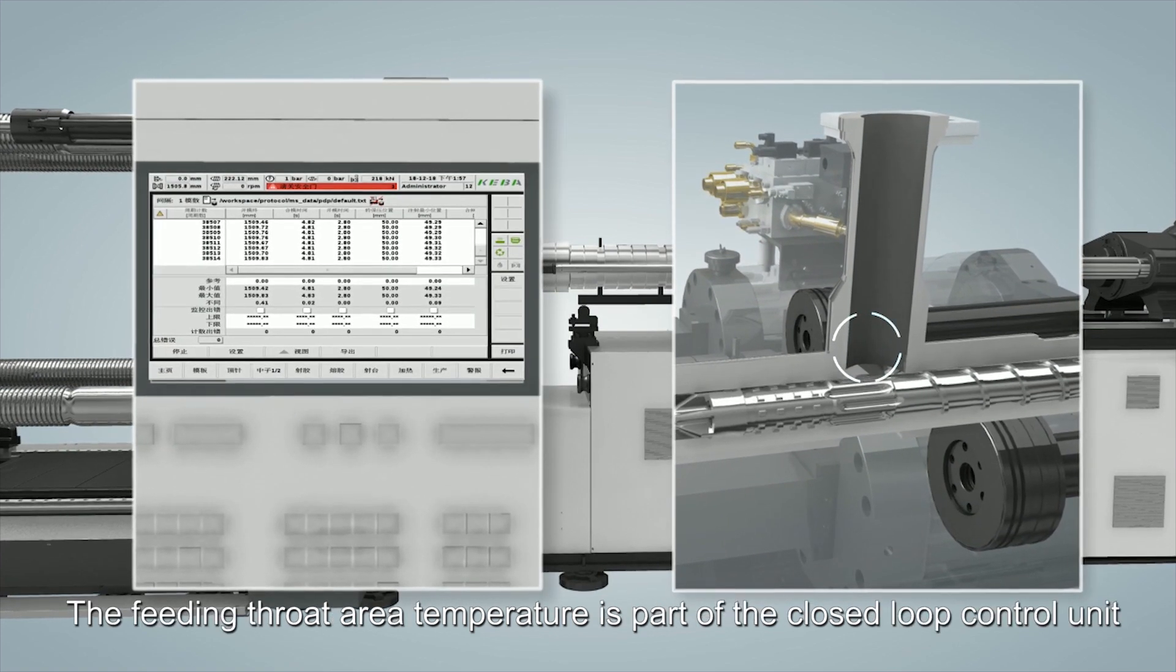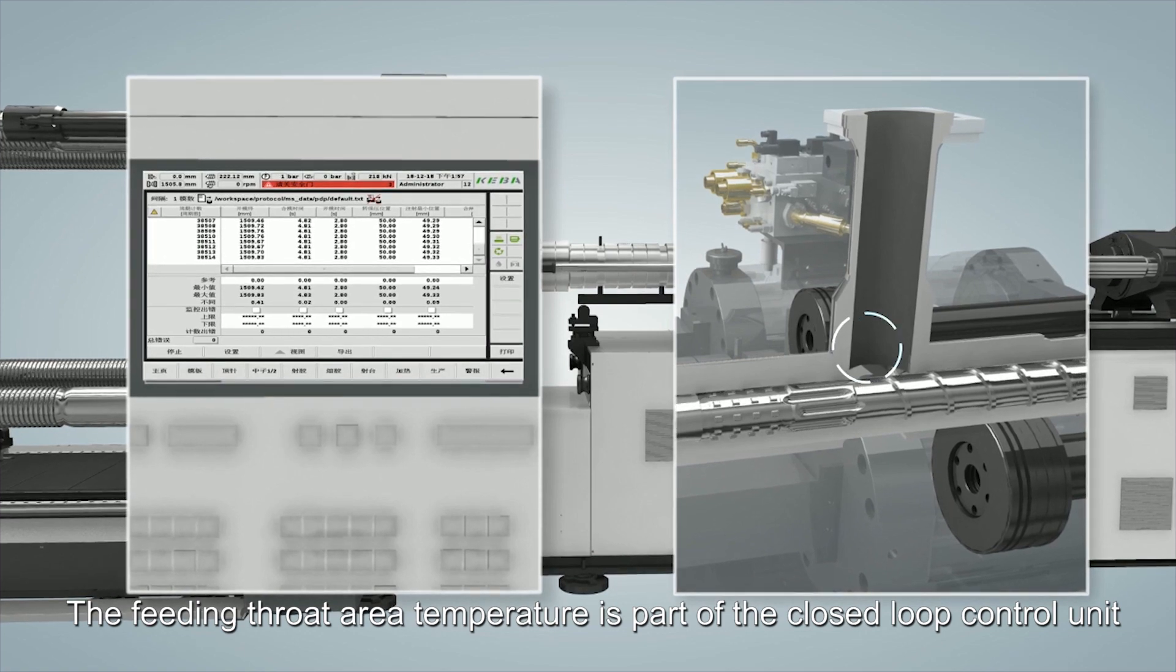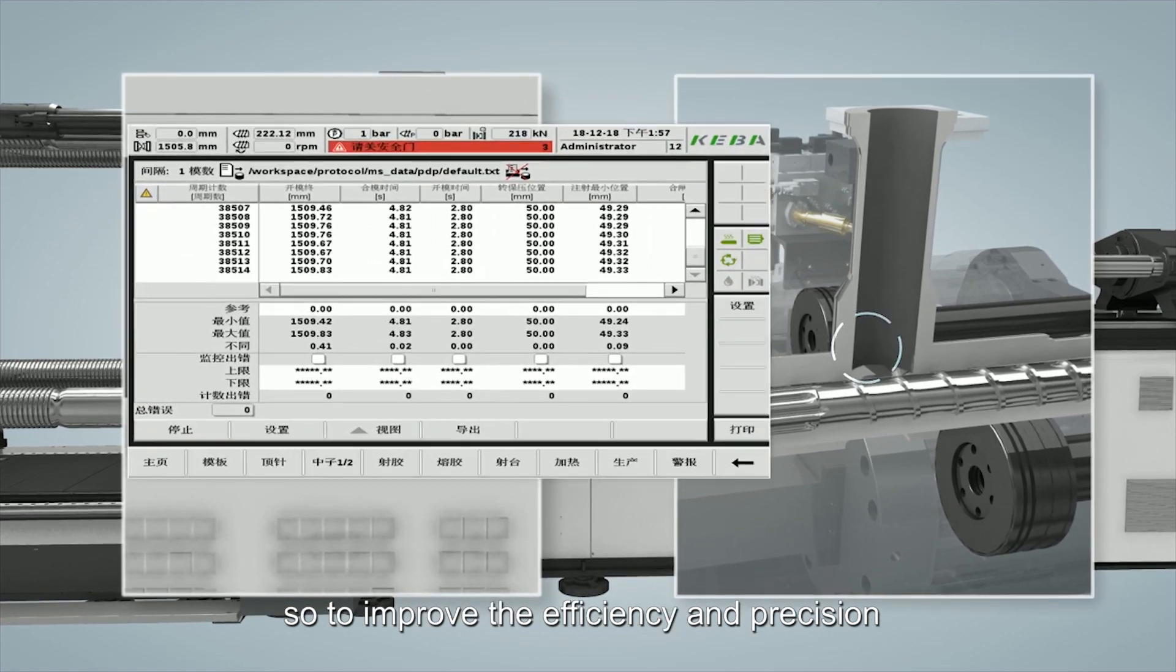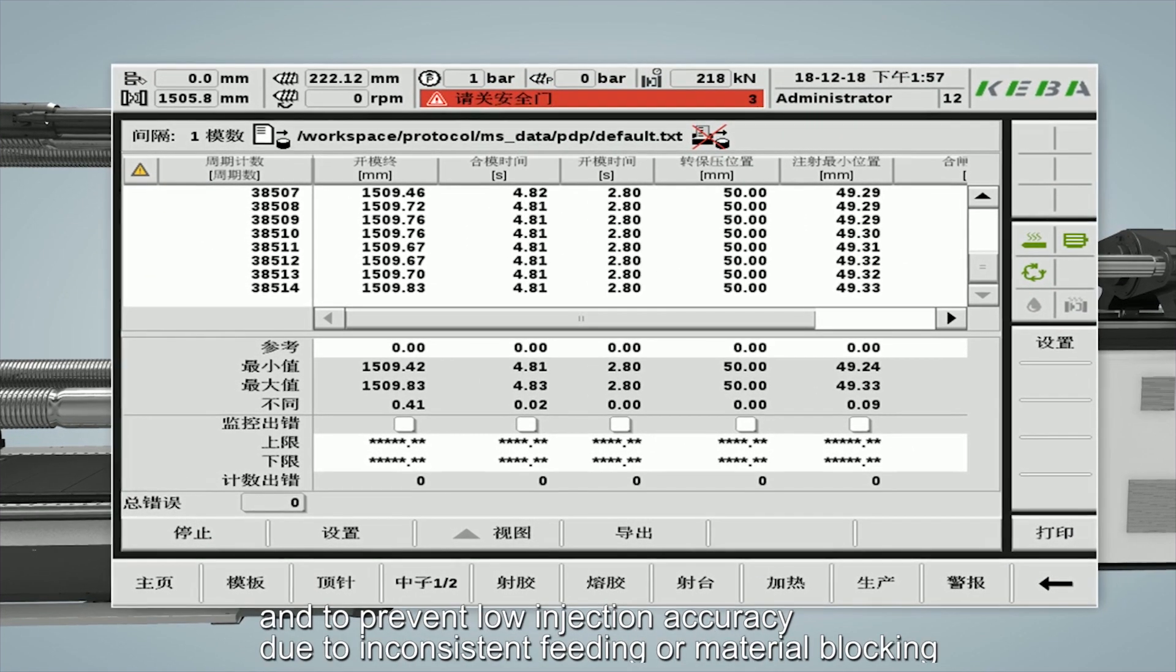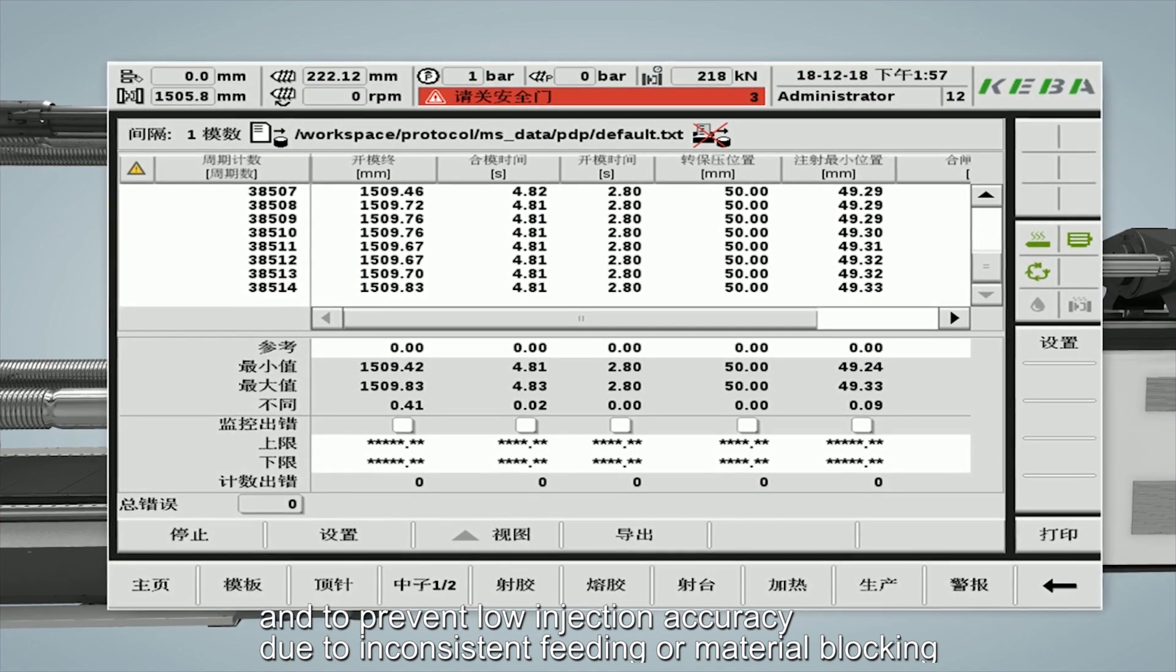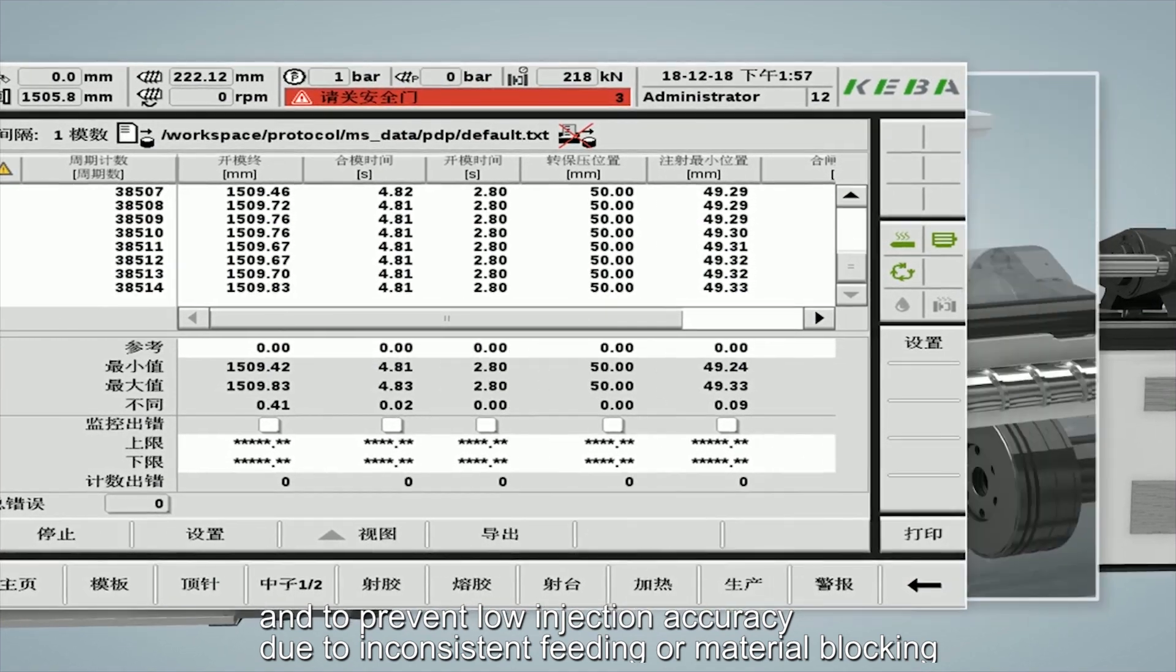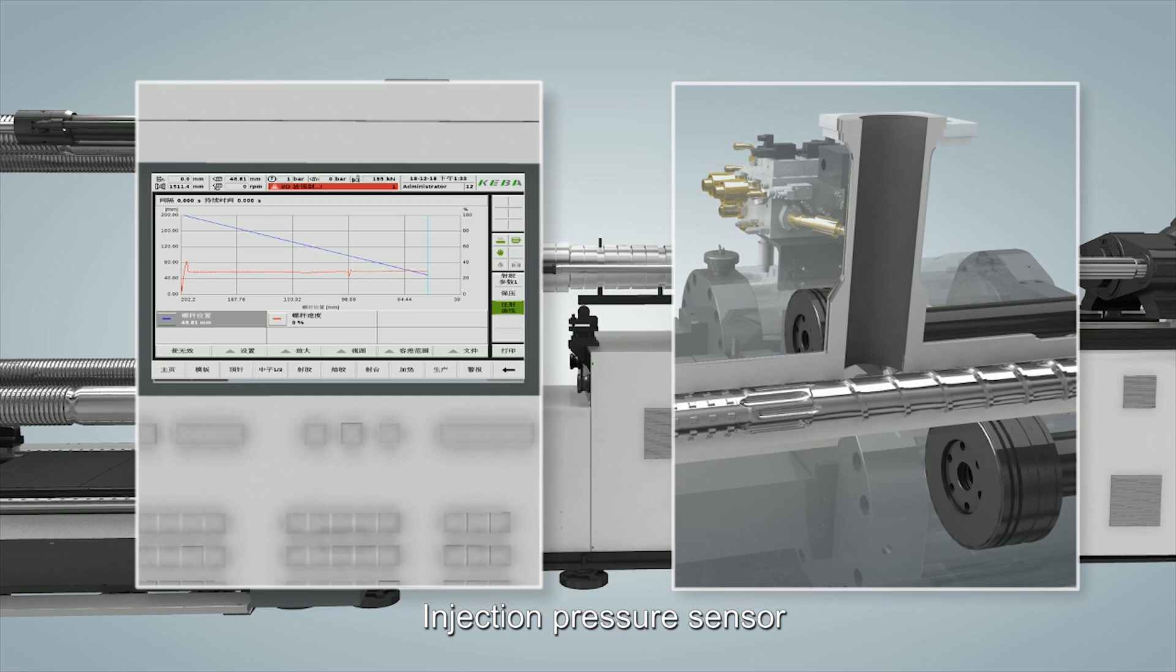The feeding throat area temperature is part of the closed-loop control unit to improve efficiency and precision, preventing low injection accuracy due to inconsistent feeding or material blocking. Injection pressure sensor feeds back pressure simultaneously.